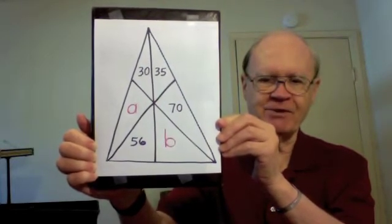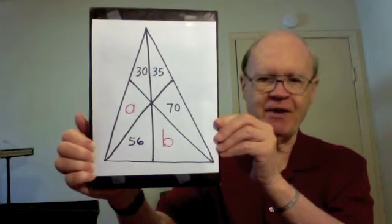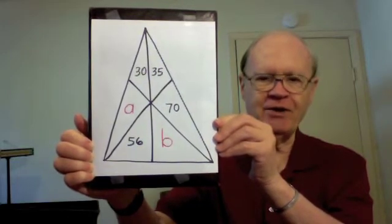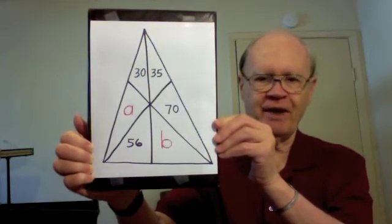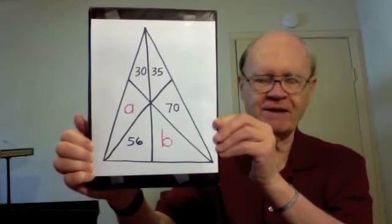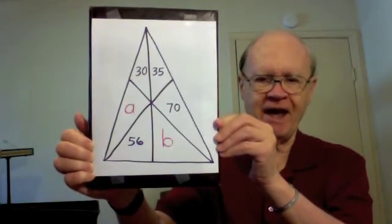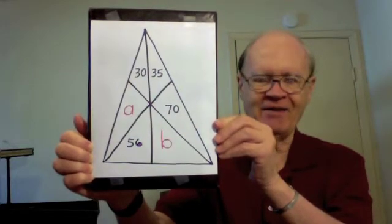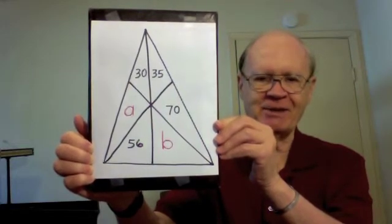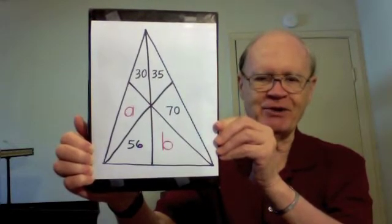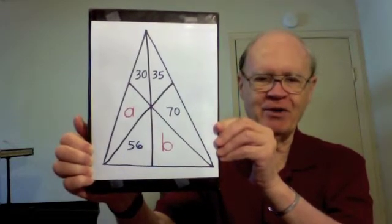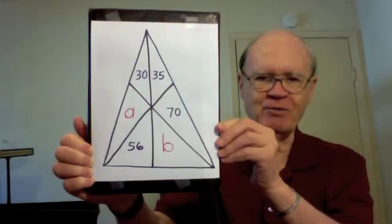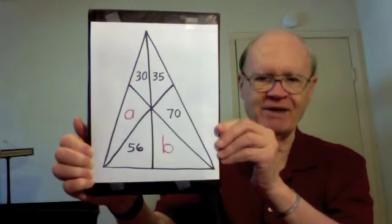But as you see, two of the areas are unknown. They are designated A and B. The challenge is simply to determine those two missing areas, A and B.